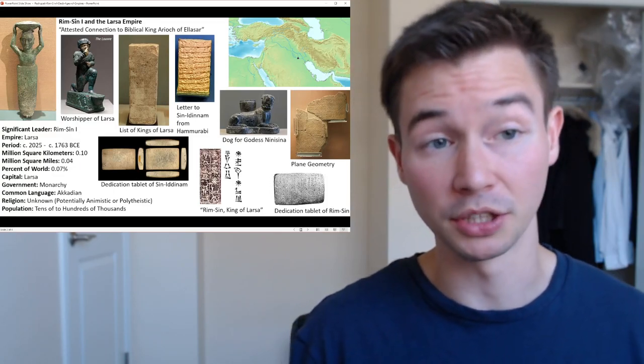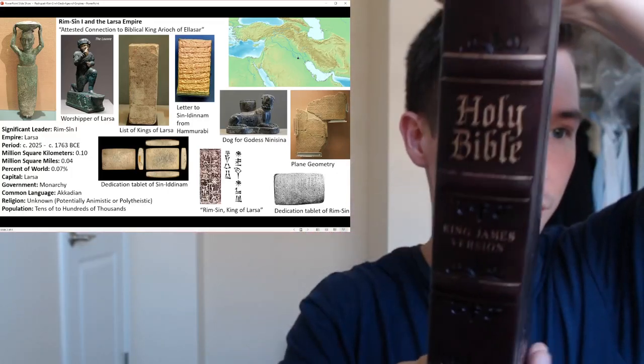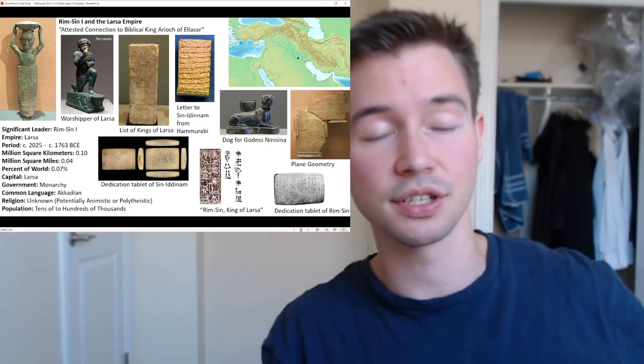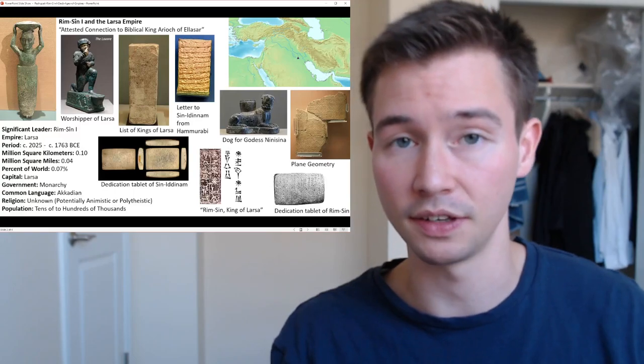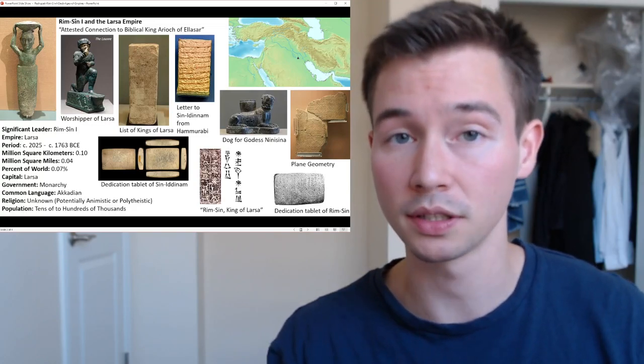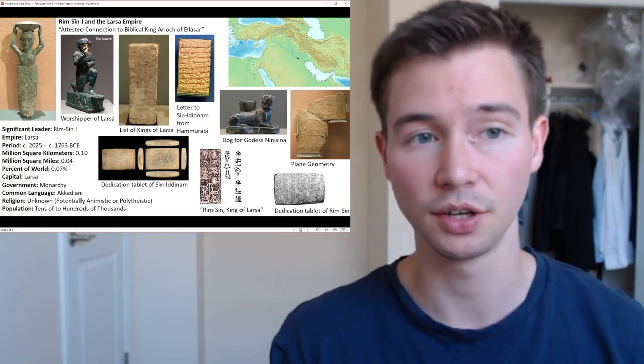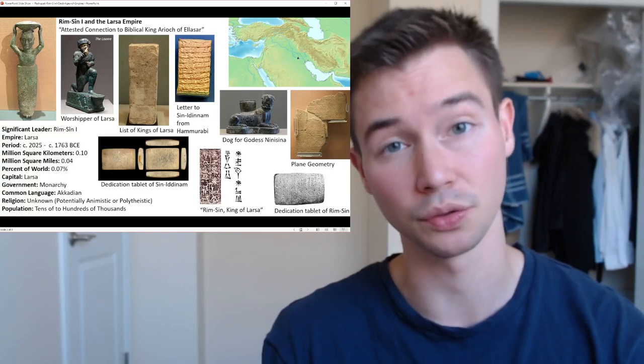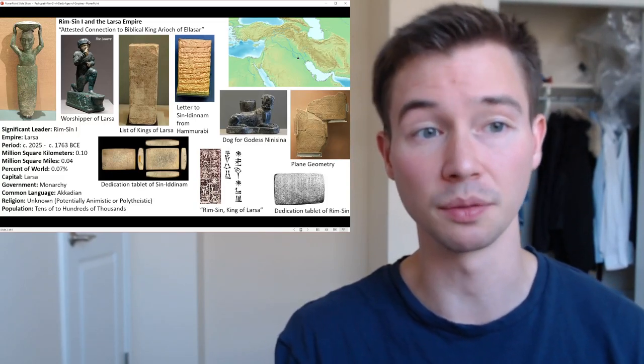I might add, in the Old Testament, which I actually have here, in the story of Sodom and Gomorrah, there's a biblical king named Ariok of Elaser, and Elaser is potentially Rim-Sin, or perhaps one of his descendants. Ariok might mean Rim-Sin. I like to believe things that are more likely true than not. Nonetheless, there's an attested connection to the biblical king of Ariok.